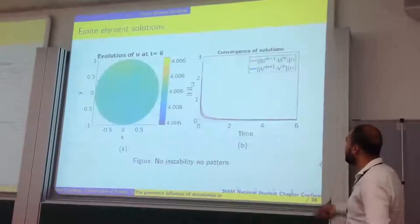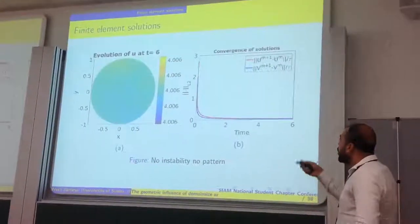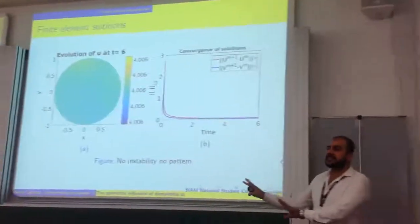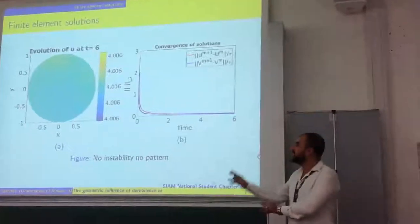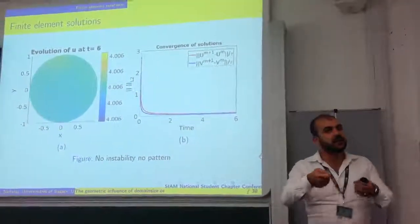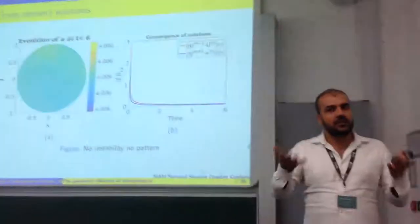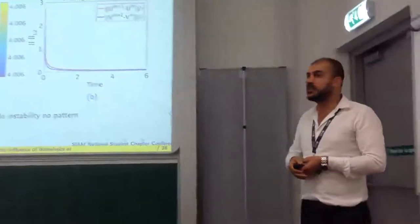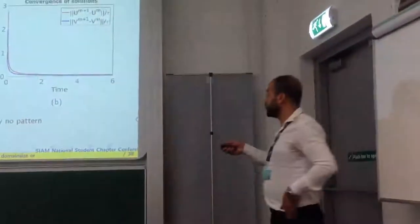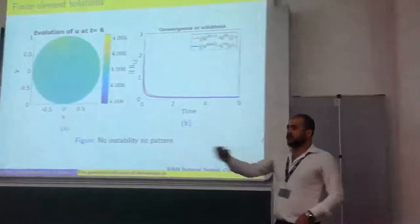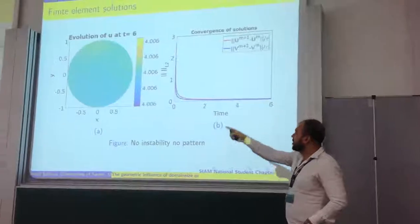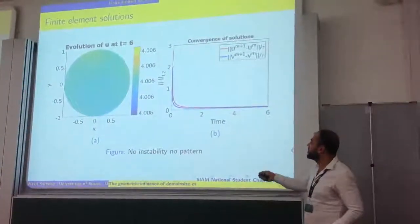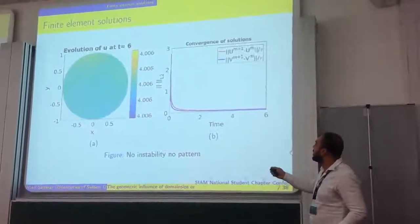These are the stable regions — not impressive compared to the other results. If we choose the parameters in completely stable regions, you give the system some perturbation from the uniform steady state, run it, and it will converge back to a constant steady state — not much is happening, patternless.